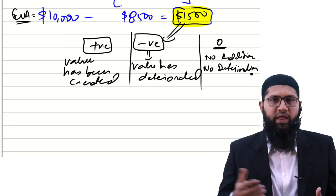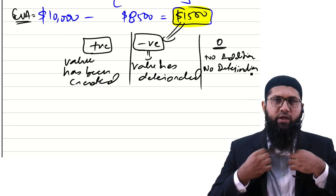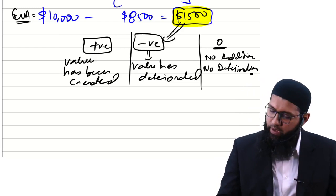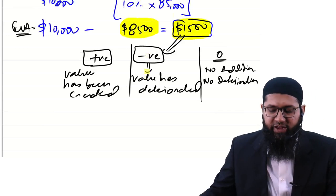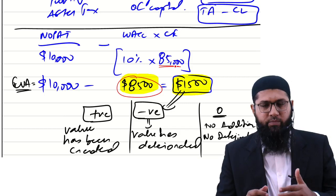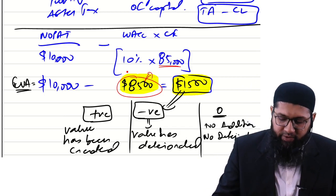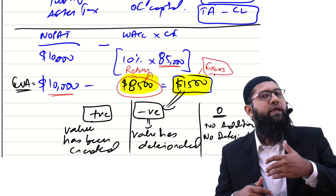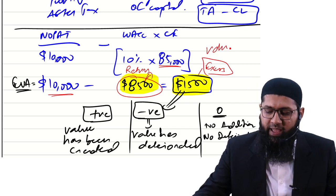To summarise: positive EVA means value has been created; negative EVA means value has been deteriorated; zero EVA means value has neither been added nor deteriorated. What EVA is suggesting is that, based on the investment and the required rate of return, investors demanded a return of $8,500. The business earned $10,000, so there is an excess return — value has been created.